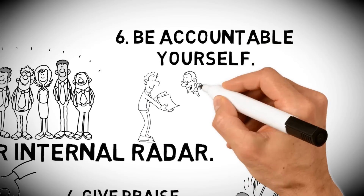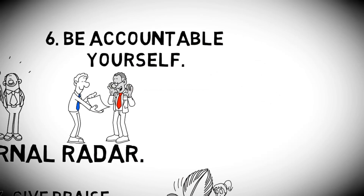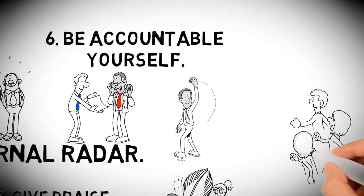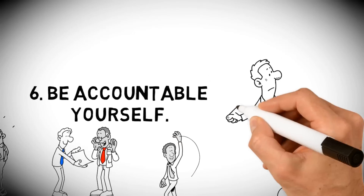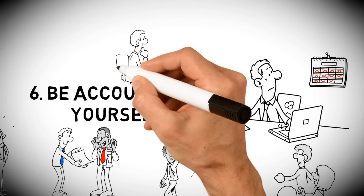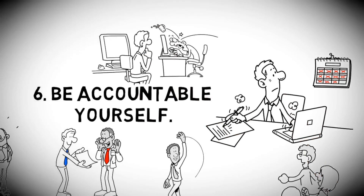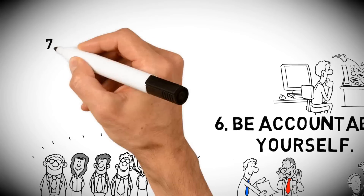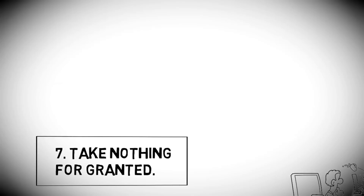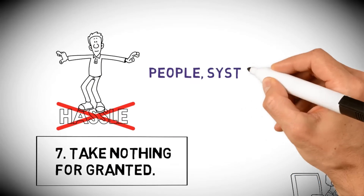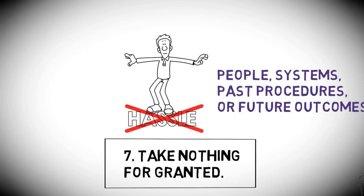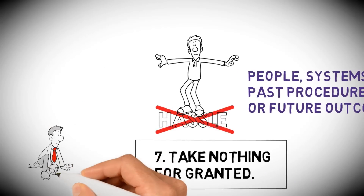Six: be accountable yourself. Employees look to the person in charge. Even those who have good leadership skills themselves will look to a superior motivator. If you are not accountable for your actions, it is very hard to ask employees to feel that they should be.